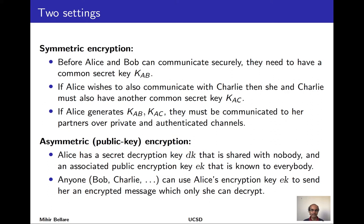In the public key model, Alice has a secret decryption key shared with nobody. However, associated to that decryption key is a mathematically related encryption key ek, and that encryption key is public. It's known not only to Bob but to anyone who may want to send Alice encrypted data, and also to the adversary. Then anybody can use Alice's encryption key ek to create ciphertext and thereby send encrypted messages to Alice that only she can decrypt. This simplifies key management and distribution.